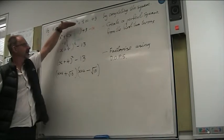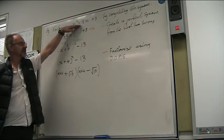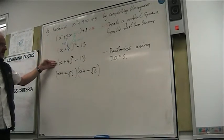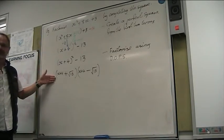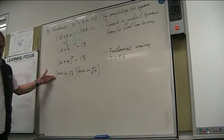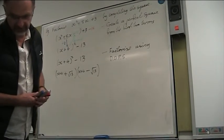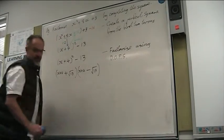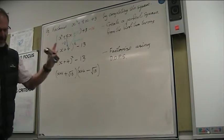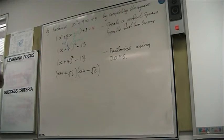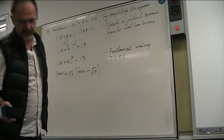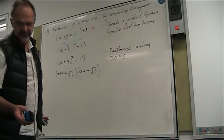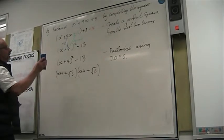So completing the square turns x squared plus 8x plus 3 into x plus 4 all squared minus 13. And the factorising part gives us the final factorised form. Now in your textbook they set it out differently to this. If you like what's in the textbook then use that, but a lot of people don't like it because there's lots of brackets and it gets very confusing.